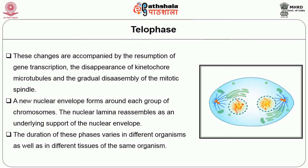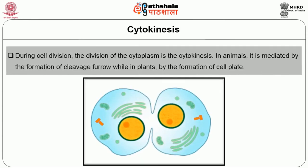The major phases of cell division are shown in the figure. The duration of these phases varies in different organisms as well as in different tissues of the same organism. Now we are going to see about the cytoplasmic cell division, called cytokinesis. During cell division, the division of the cytoplasm — cytokinesis — in animals is mediated by the formation of a cleavage furrow, while in plants by the formation of a cell plate.